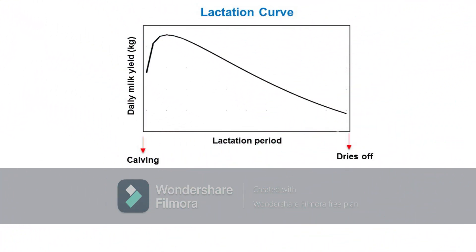Milk production over time of dairy animals can be represented in a lactation curve. The lactation curve is the graphical representation of daily milk production throughout the lactation period, starting from the onset of lactation after calving until the cow's milk dries up, typically at about 305 days.